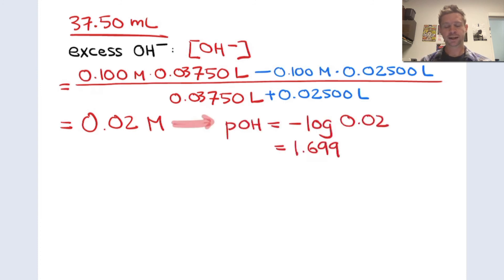From this, we can infer the pOH by applying the definition of pOH, negative log of 0.02, and that's 1.699. To find the pH, we apply the relation between pH and pOH. pH is equal to 14, that's pKw, minus the pOH, and we get a pH of 12.301.